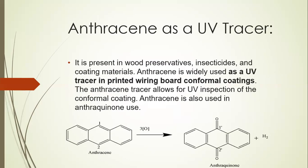An important application is Anthracene as a UV tracer. It is present in wood preservatives, insecticides, and coating materials, and is widely used for UV inspection of conformal coatings in printing circuit board applications. Anthracene is also used in the production of Anthraquinone: heat Anthracene in the presence of oxygen, and Anthraquinone is obtained along with a hydrogen molecule.